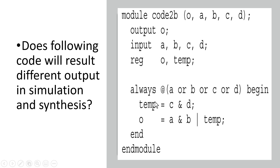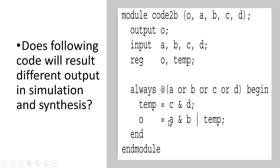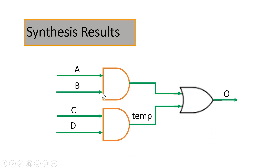Let us look at the synthesis results first. When the synthesizer encounters this always block, it will place an AND gate on inputs c and d, with output temp. Then it places an AND gate on inputs a and b, and then an OR gate combining the output of that AND gate with temp, giving us the final output o.